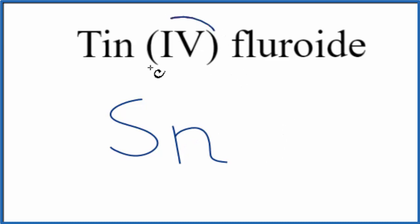And we can see this four here. That tells us tin is a transition metal and it has a four plus ionic charge.